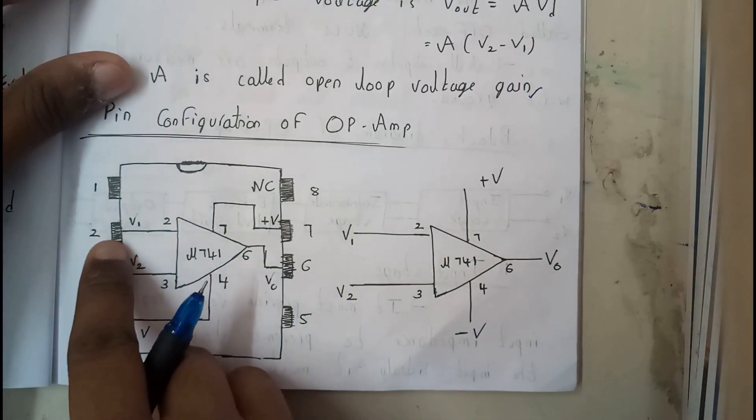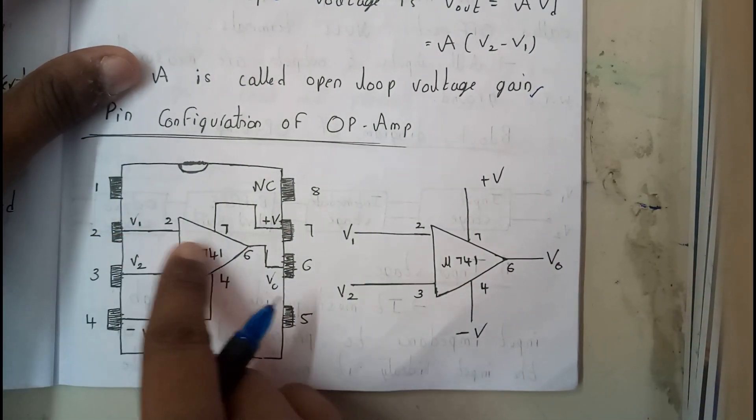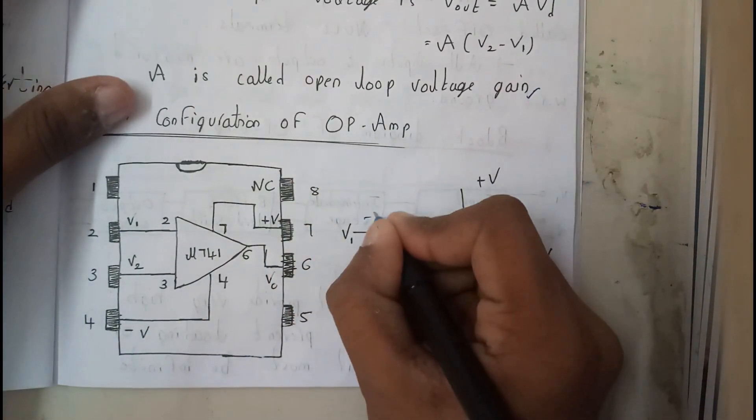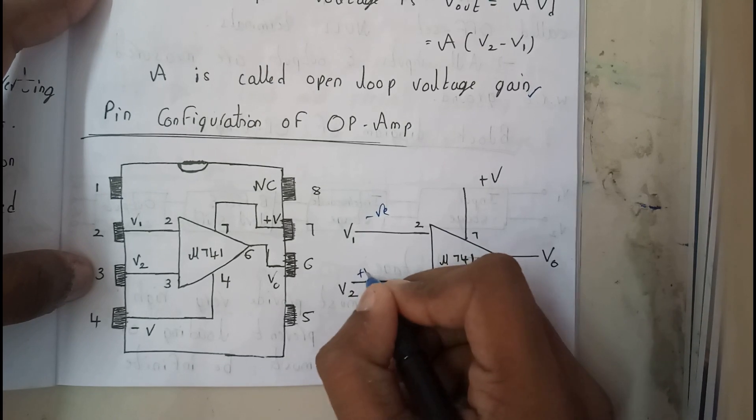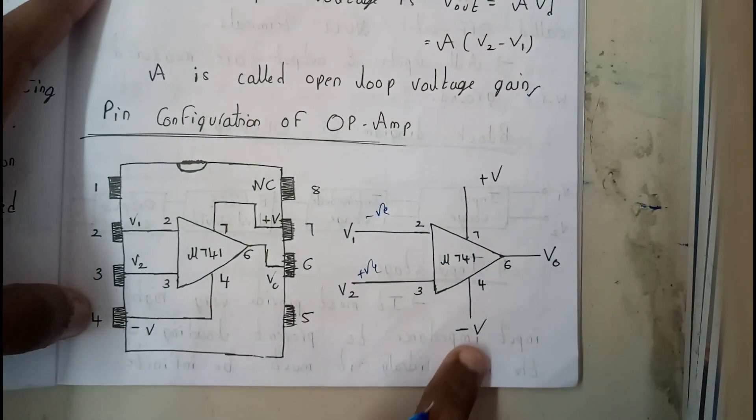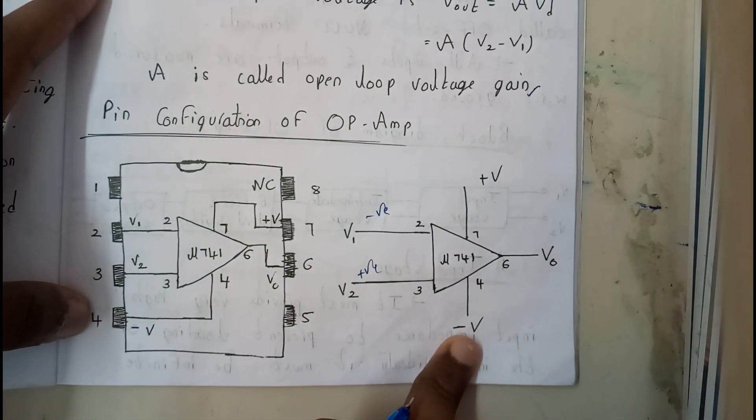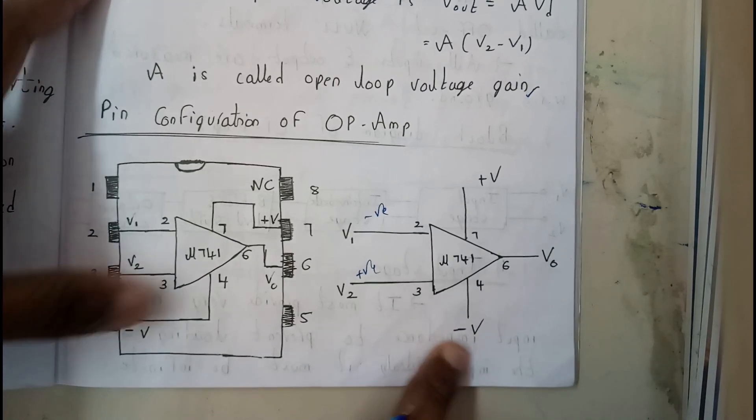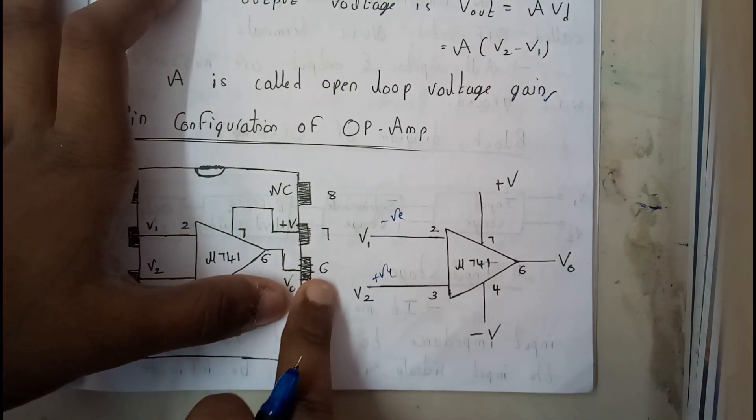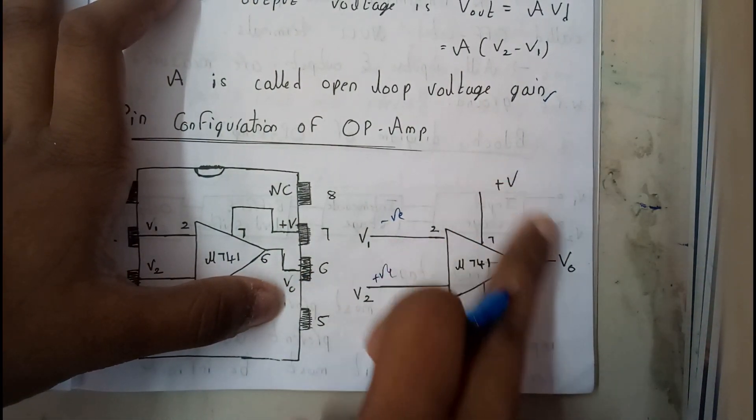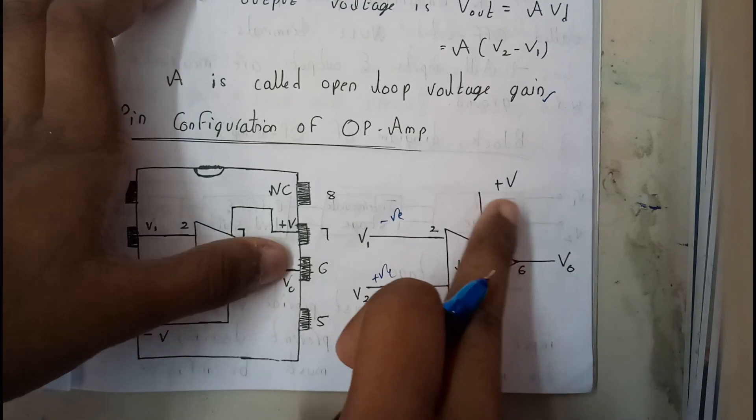So the second pin will be used as inverting input. And the third pin is used as non-inverting input. And the fourth pin is minus volts, we are giving minus EE. The fifth pin will be empty in operational amplifier. And the sixth pin will be our output.